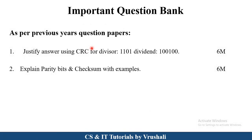From an exam point of view, there are two most important questions from previous year question papers. First: justify the answer using CRC for a divisor like 1 1 0 1 divided into a particular message, solving and justifying how the sender and receiver accept the actual information — worth 6 marks. Second: explain parity bits and checksum with examples — also for 6 marks. You should prepare all these methods with particular examples.